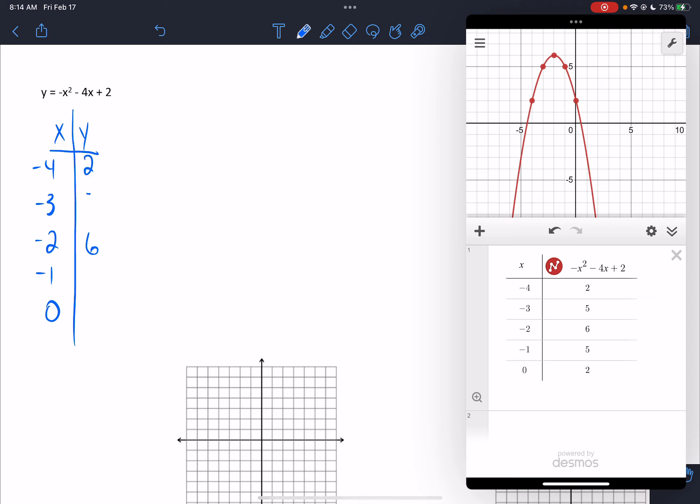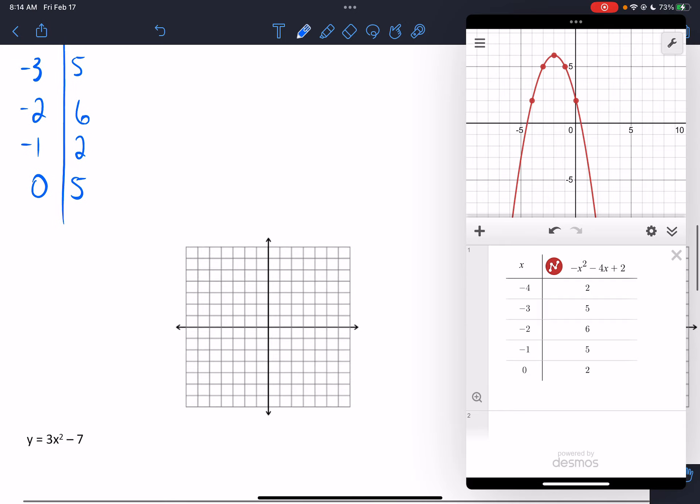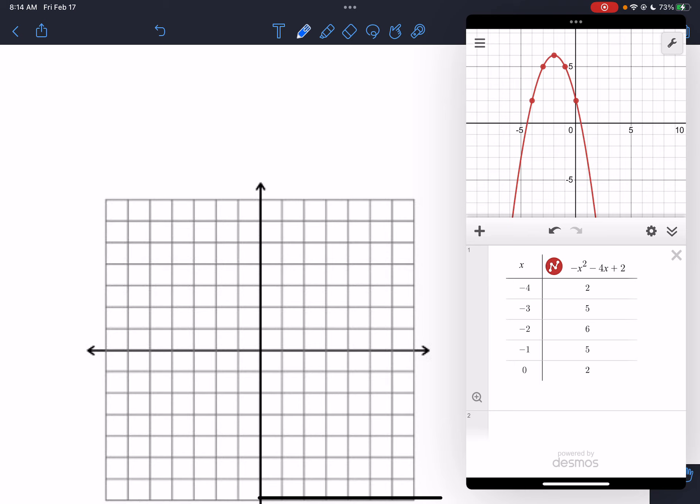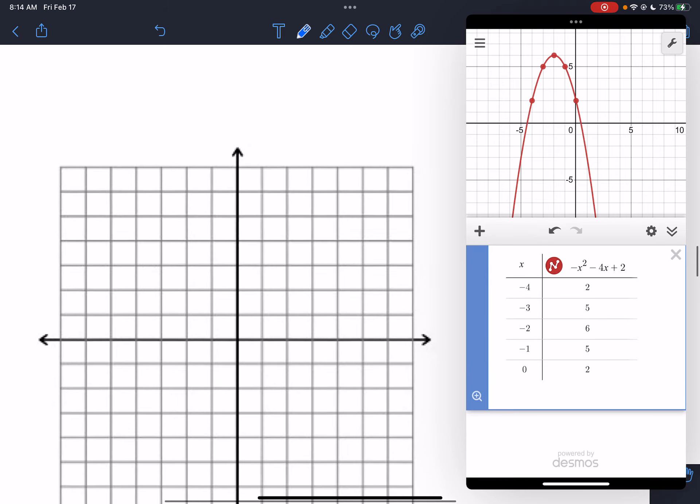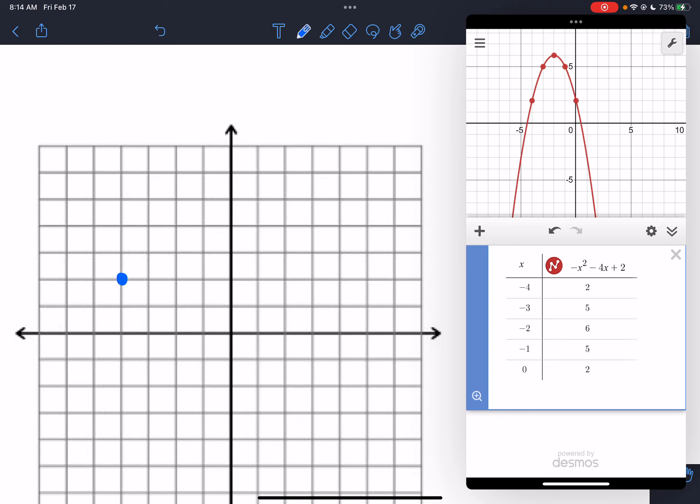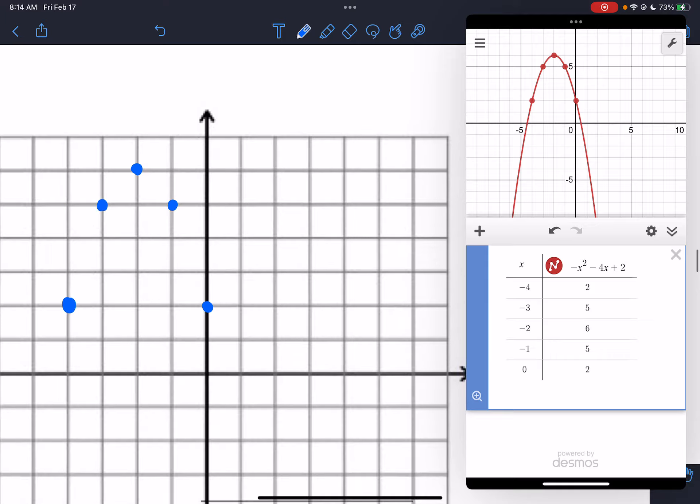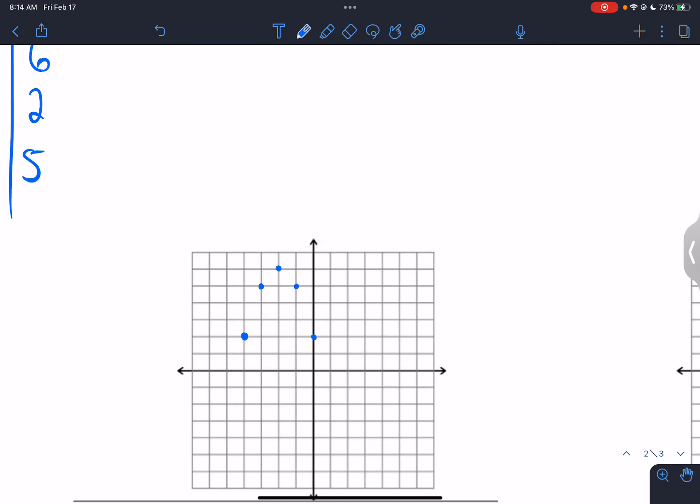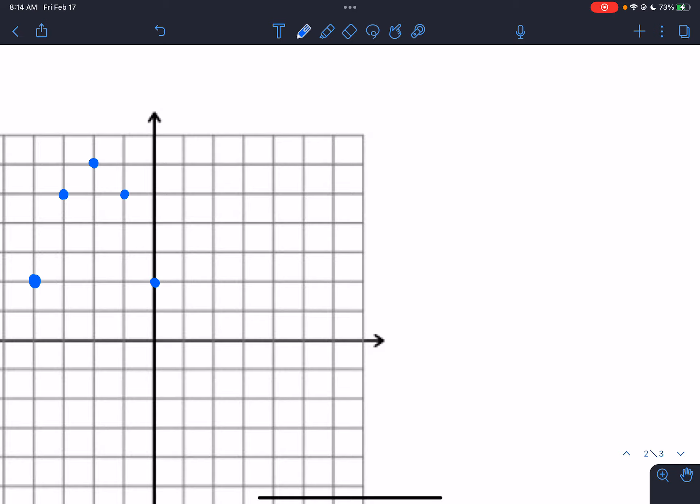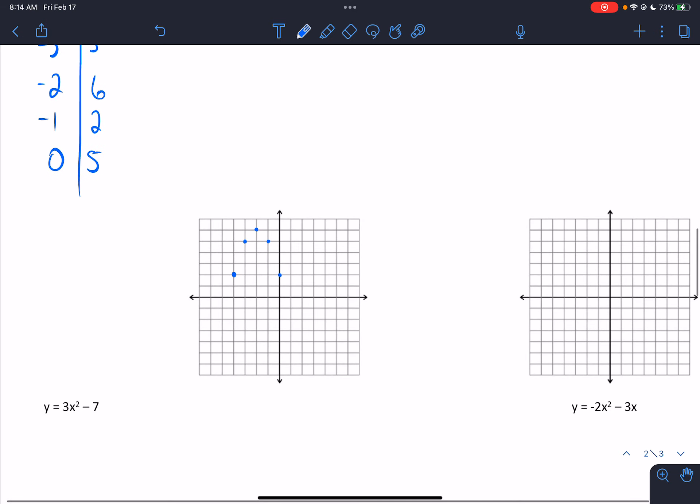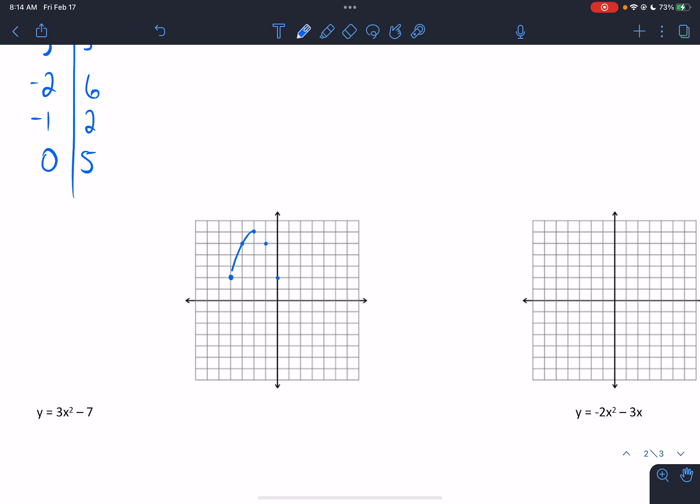So this is 2, 5, 6, 2, 5. So when I graph this, negative 4, 1, 2, 3, negative 2, negative 3, 5, 6, 5, 2. The nice thing is when you go to graph, I know that it's going to be symmetrical, so that's how I could graph that kind of quickly once I got to my vertex. So then I can draw my parabola, just like that.